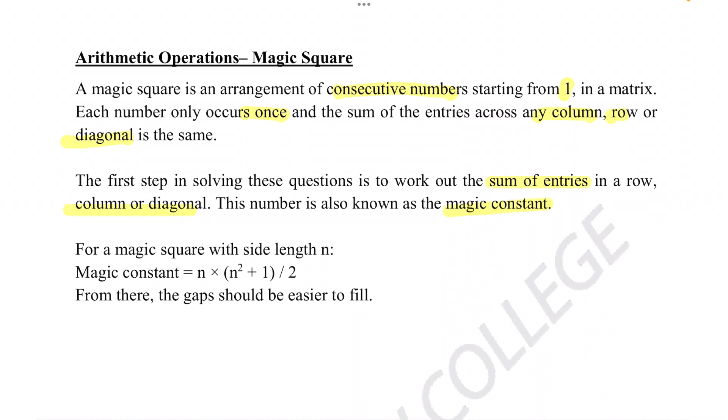For a magic square with a side length n, magic constant equals n times n squared plus 1 divided by 2. From there the gaps should be easier to fill.